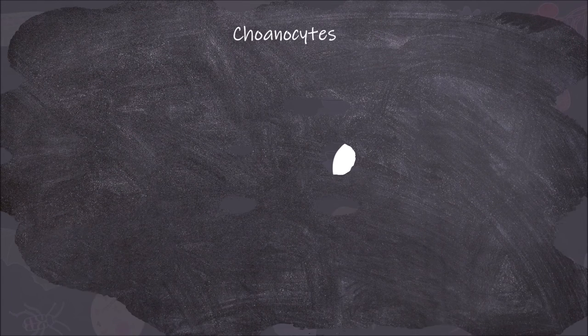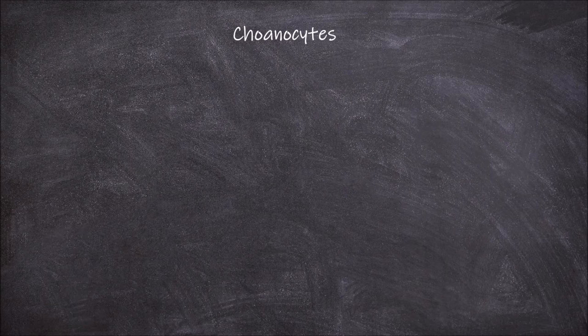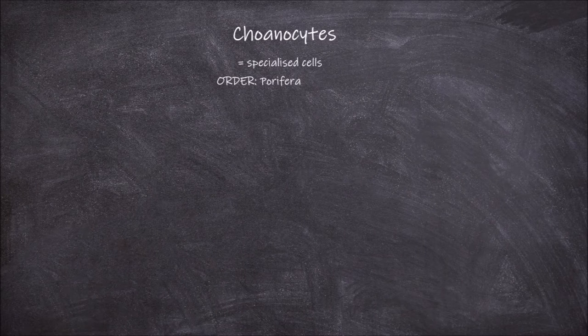Welcome back to my channel. In today's video we're going to be going over the structure and function of a choanocyte. Choanocytes are specialized cells found in members of the order Porifera, commonly known as the sponges.